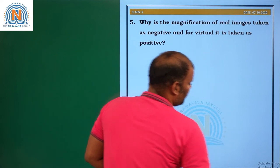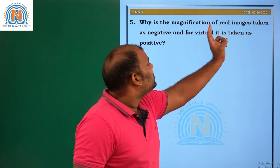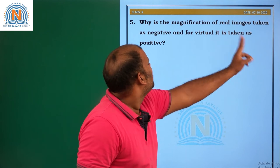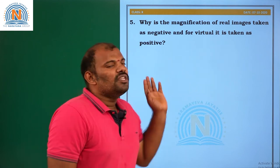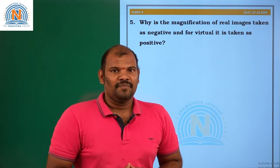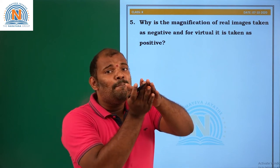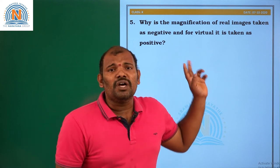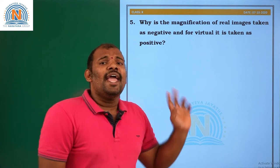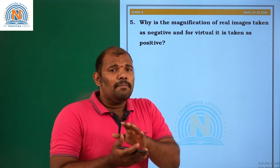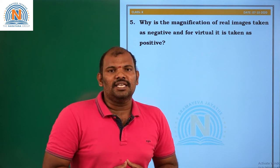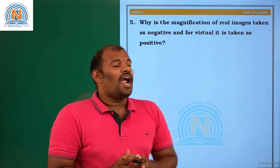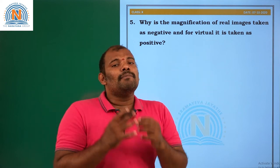Question number 5: Why is the magnification of real images taken as negative, and for virtual images it is taken as positive? In the case of a real image, the image forms below the principal axis. Virtual images are erect and form above the principal axis. Because of this reason, virtual images have positive magnification and real images have negative magnification.